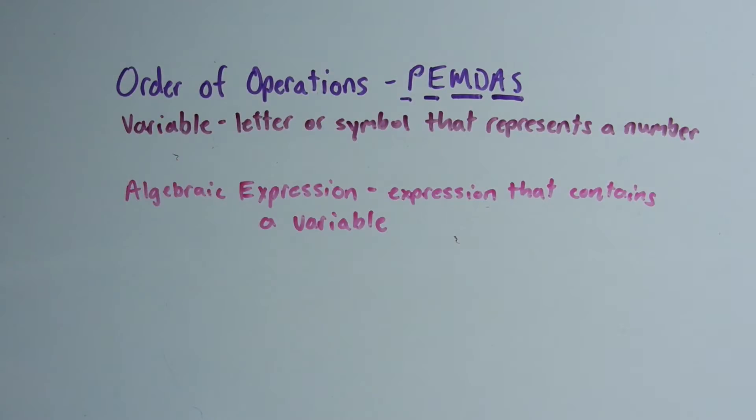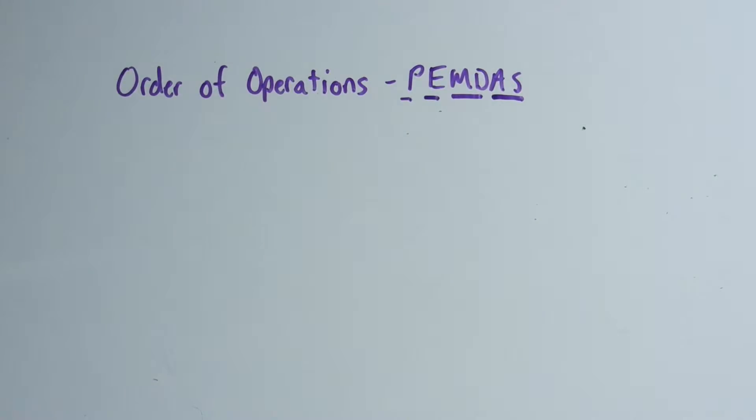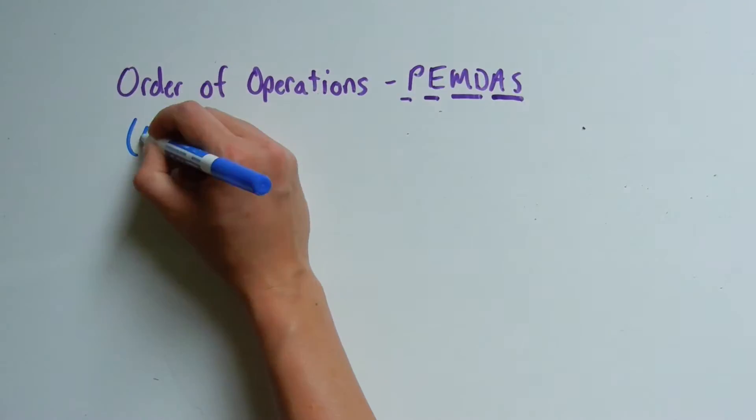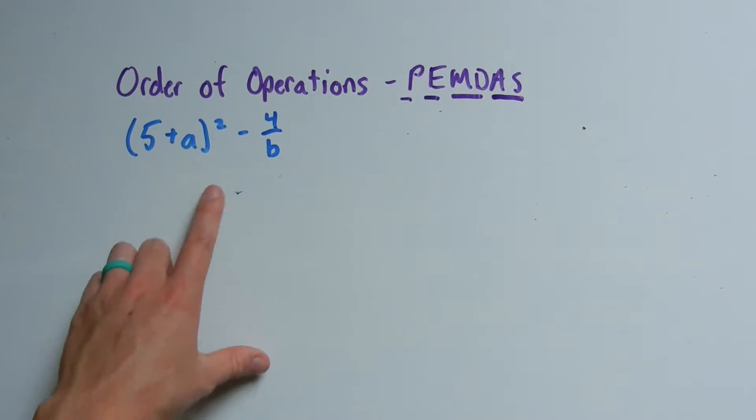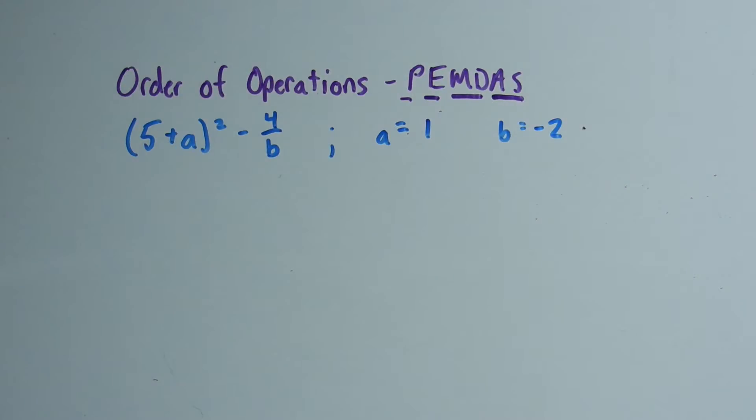Let's go ahead and evaluate an algebraic expression. The algebraic expression I'm going to use in this video will be the following: 5 plus a squared minus 4 over b. I'm going to give you what your variables are equal to—a is equal to 1 and b is equal to negative 2.